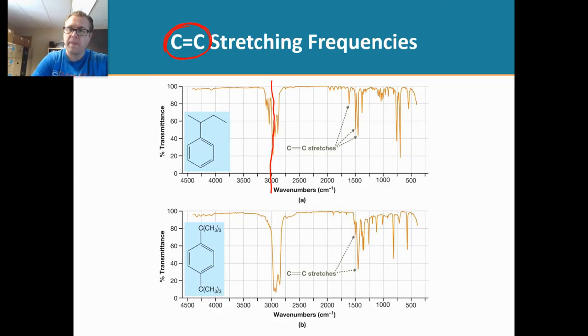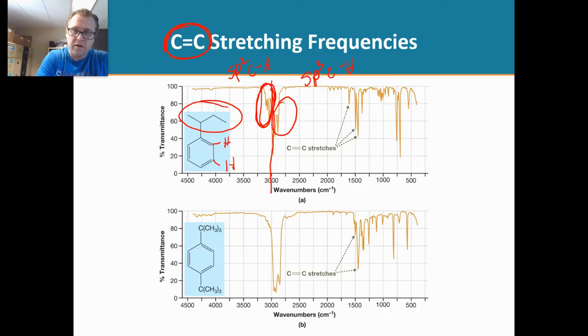Well, this side right here is sp3 carbon-hydrogen stretches, which can be seen right there. There's a lot of sp3 hybridized carbon-hydrogen bonds. And then what's this right here? That is going to be sp2 carbon-hydrogen stretches, and we can see all those sp2 carbon-hydrogen stretches on the benzene ring. Isn't that cool?